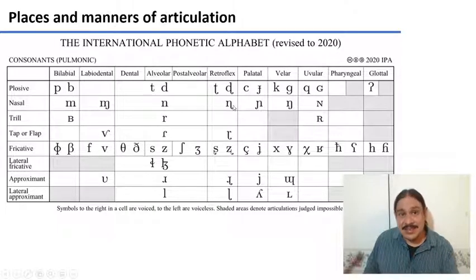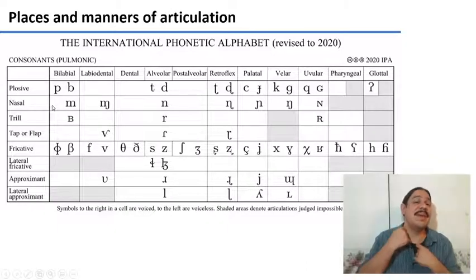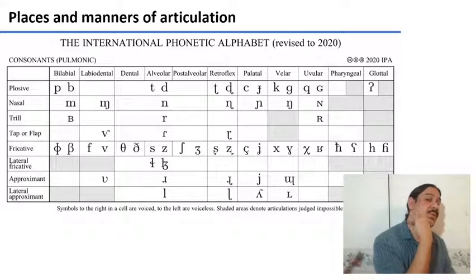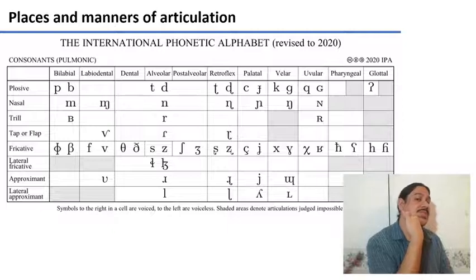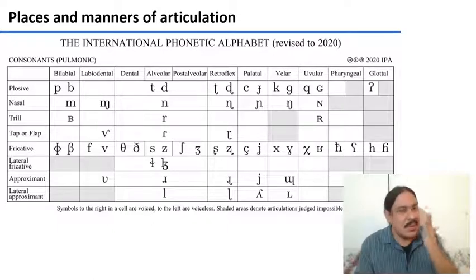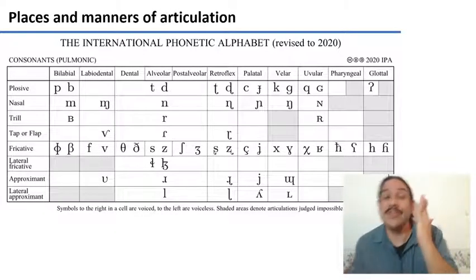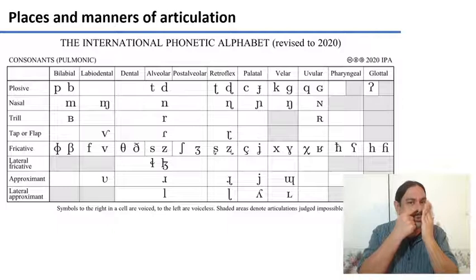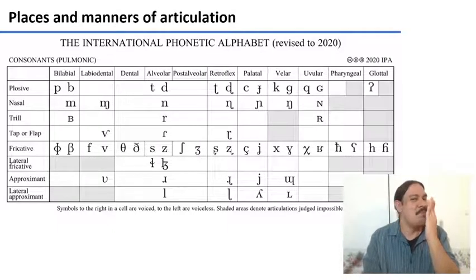We looked at stops, at fricatives, and at nasals, which are produced by letting some air into your nose. There's something in the back of your mouth called a velum which can be in an up position so that all the air comes into your mouth, or it can be open so that some of the air comes into your nose. If you pronounce a word like 'mom', 'no', or 'sing' and put your hands in front of your mouth, you'll notice that some of the air is rushing through your nose. Please do it along with me: mom, no, none, sing.